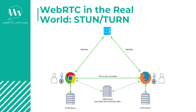So now we have the whole picture. First, each client will get access to the users' media devices. Then an RTC peer connection is created and the signaling process begins. This process consists of two concurrent tasks: both peers will exchange the offer and answer messages, and both peers will ask a STUN server for their external IP addresses and will be sending those as ICE candidates to the other peer.